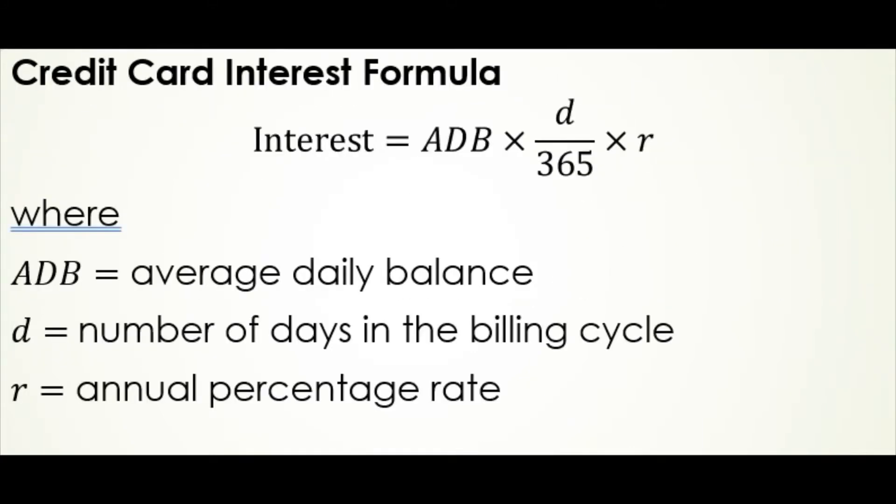And we're going to use that average daily balance in this interest formula for credit card interest. The interest is going to be equal to the average daily balance times the number of days in the billing cycle divided by 365, and then we're going to take that and multiply it by the annual interest rate as a decimal. So it's average daily balance times the number of days in the billing cycle divided by 365 times the annual percentage rate.